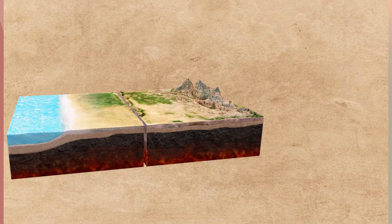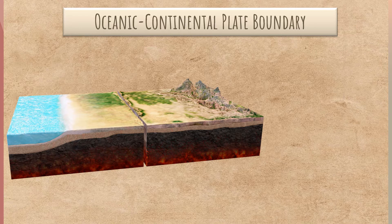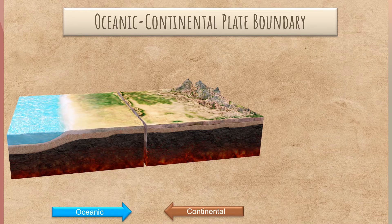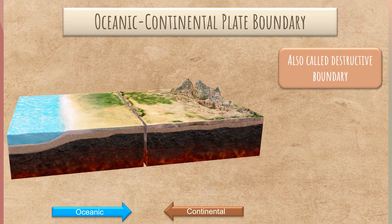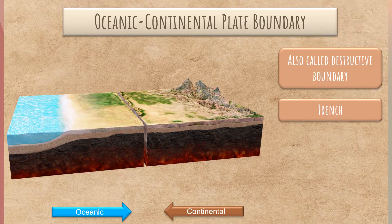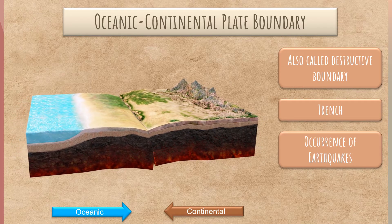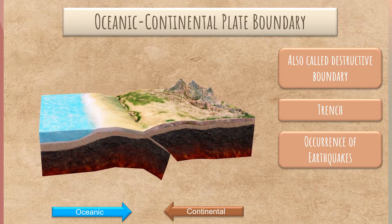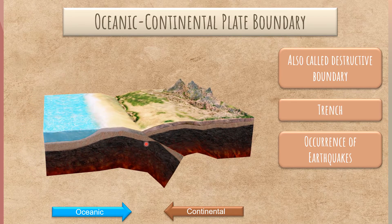The first type of convergent boundary is the oceanic-continental plate boundary. It is where oceanic and continental plates collide. This boundary is also called destructive boundary. One important geologic feature is formed, and that is the trench. There is also the occurrence of earthquakes, and in this type of convergent boundary, subduction happens.